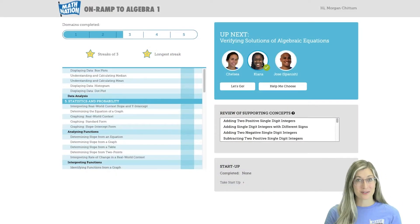Math Nation has two on-ramp tools, on-ramp to 6th grade math and on-ramp to Algebra 1. On-ramp to 6th grade math helps students review and master the foundational math concepts they need to be successful in 6th grade math.